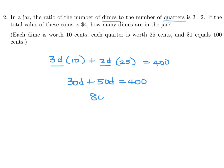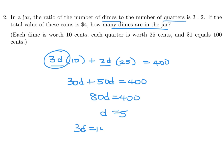So 80D is 400, and therefore D is 5. And they actually specifically want the number of dimes, which was 3D. So 3D would be 15. So there are 15 dimes in the jar.